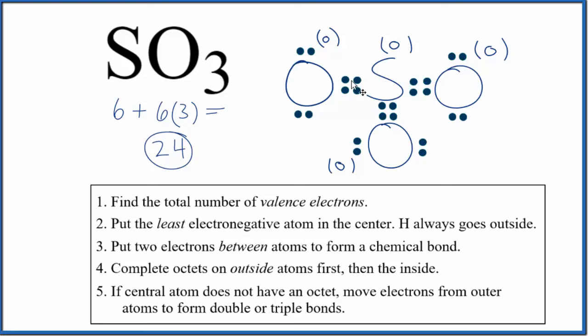You might note now that sulfur has 2, 4, 6, 8, 10, 12 valence electrons, but that's okay. Sulfur is an exception to the octet rule. It's in period three, and elements in period three and below, they can have expanded octets. So this is okay for sulfur.